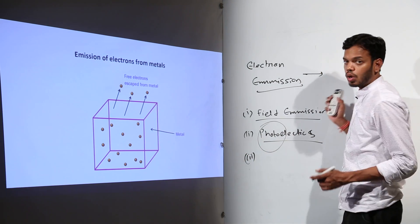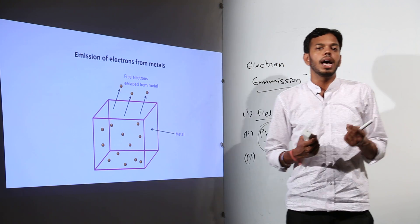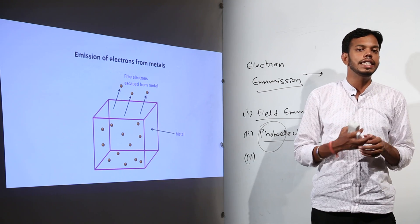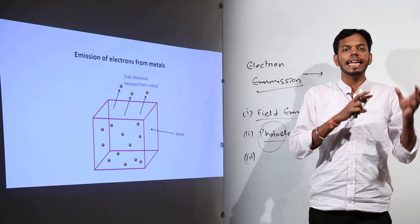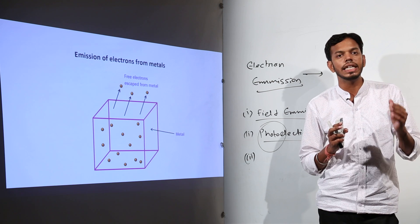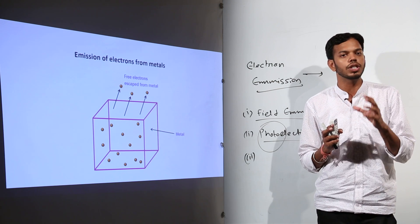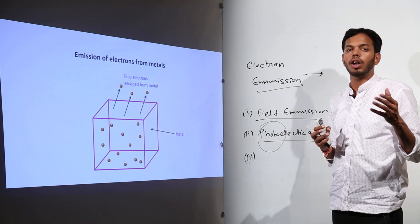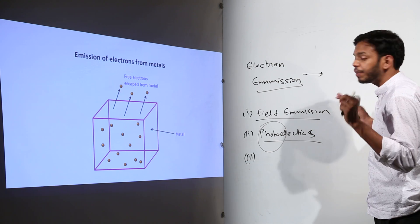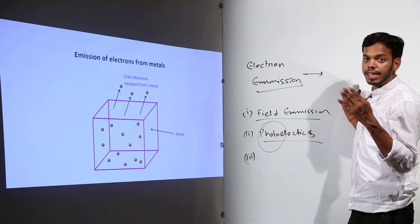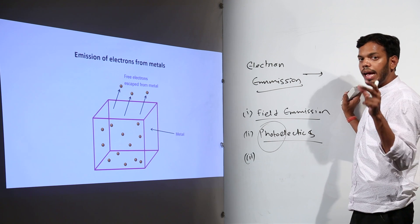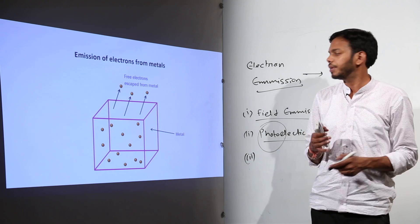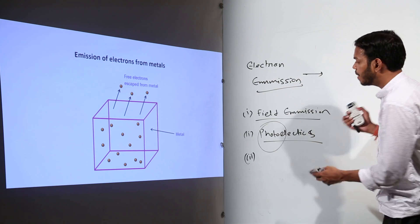Initially it was called thermionic emission because ions are produced when an atom loses or gains electrons. An atom losing an electron develops a positive charge; gaining an electron gives a negative charge — those are called ions. Thermo means heat. When we heat something and ions are produced because of liberation of electrons, this whole emission process is called thermionic emission. This is our chapter, which we are going to study in detail.